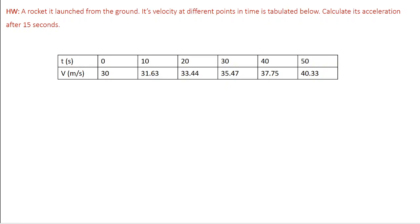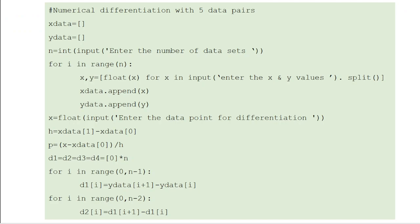Next, we perform this numerical differentiation using the Python programming language. This is an extension of numerical interpolation, so the program is almost similar to the numerical interpolation program. Only towards the end is there a slight difference — constructing the difference table is common for both interpolation and differentiation, and only the final expression differs. So about 80% of the program is similar to the previous one.